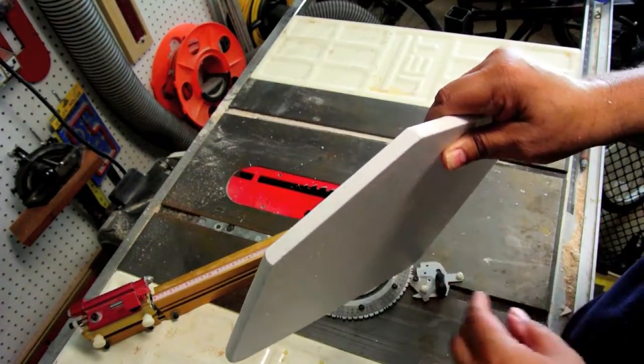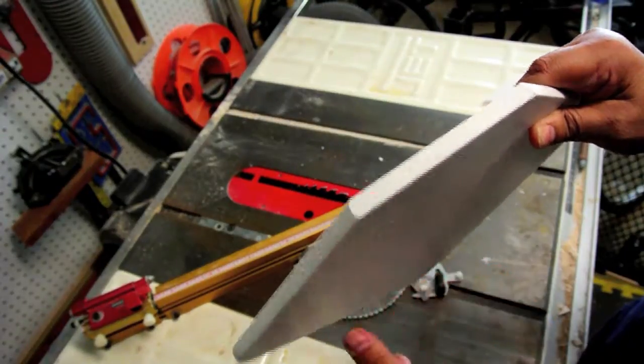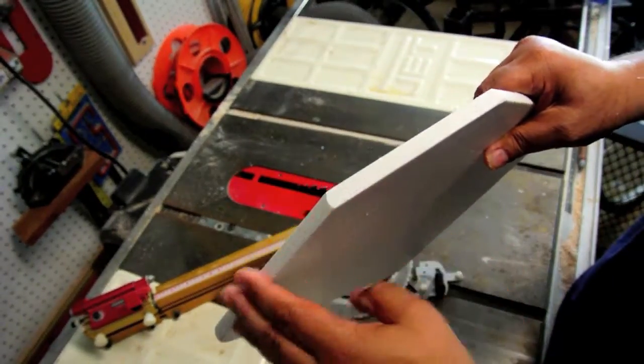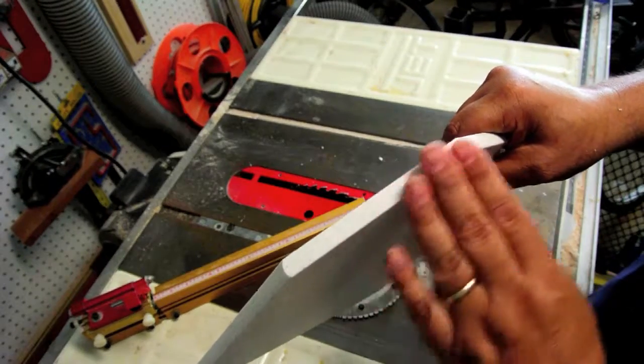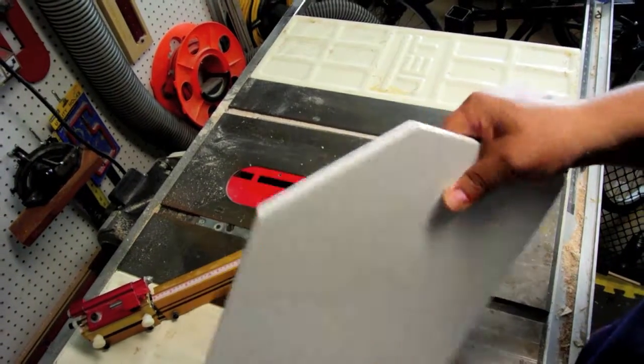Now there is a bit of a rough edge here, and you can either go to the router table and route this down, or I'm just going to run this across the sander a little bit and smooth it down, and that should be good enough.